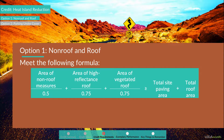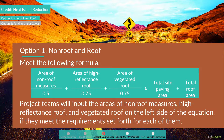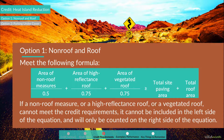The formula is: (Area of non-roof measures ÷ 0.5) + (Area of high-reflectance roof ÷ 0.75) + (Area of vegetated roof ÷ 0.75) ≥ Total site paving area + Total roof area. Project teams input the areas of non-roof measures, high-reflectance roof, and vegetated roof on the left side of the equation if they meet the requirements. If a measure cannot meet the credit requirements, it can only be counted on the right side of the equation.